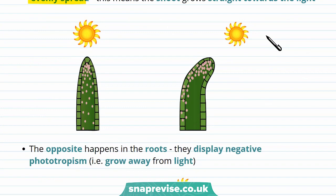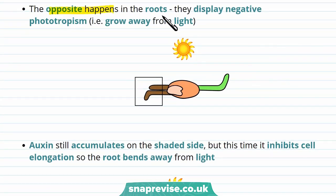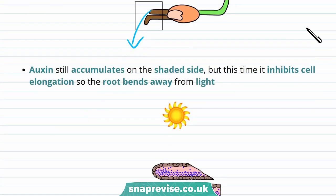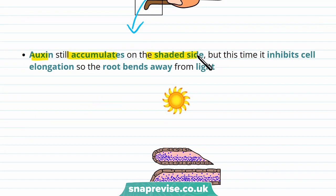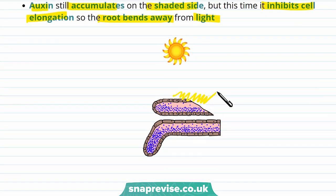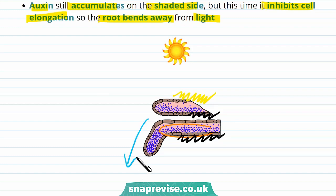In the roots, the opposite happens — roots display negative phototropism, meaning they grow away from the light. Auxin still accumulates on the shaded side, but this time it inhibits cell elongation, so the root bends away from the light. The side of the root receiving lots of light has less auxin, while auxin accumulates on the shaded side. Since auxin inhibits cell elongation in roots, this means the root will grow away from the light.